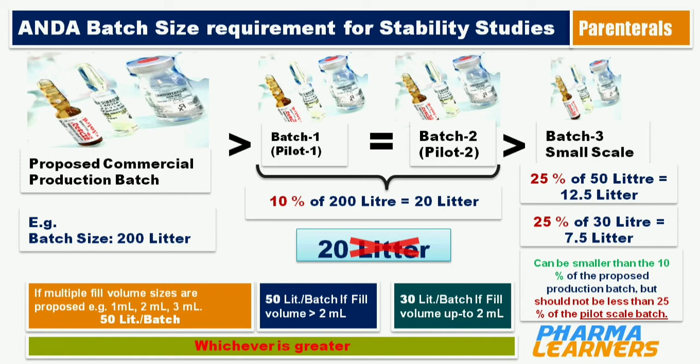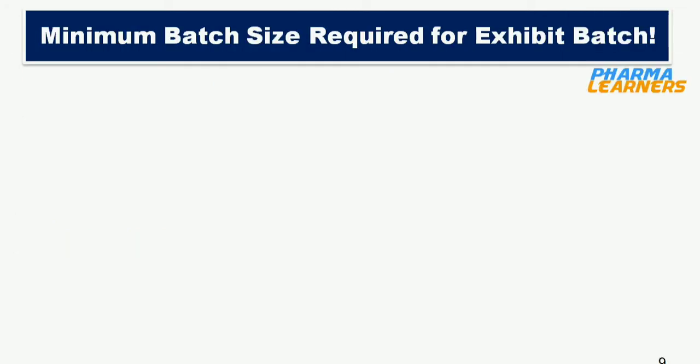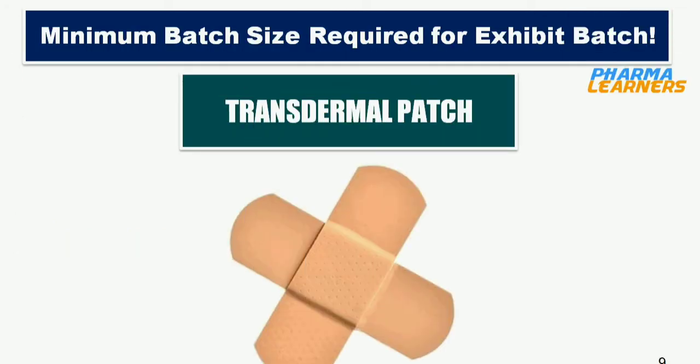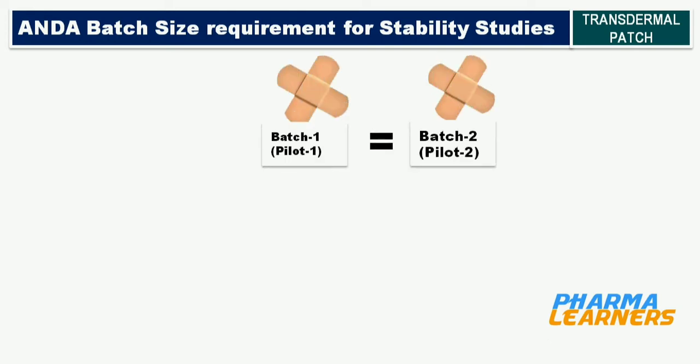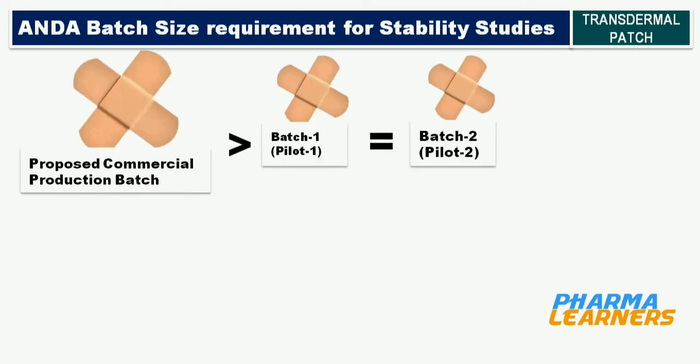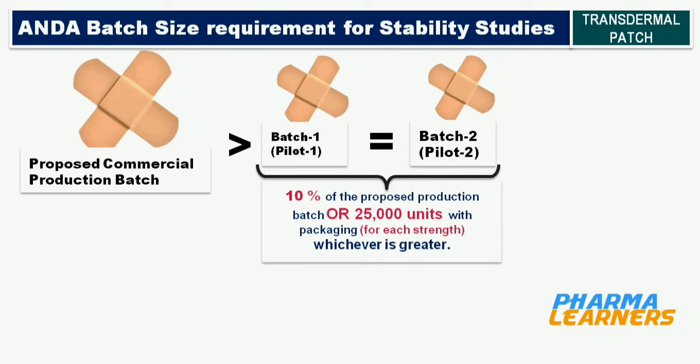This covers the batch size requirements for parenterals. Now let's move on to batch size requirements for transdermal patches. For transdermal patches, 2 out of 3 batches should be a minimum of 10% of the proposed commercial batch or 25,000 units, whichever is greater.